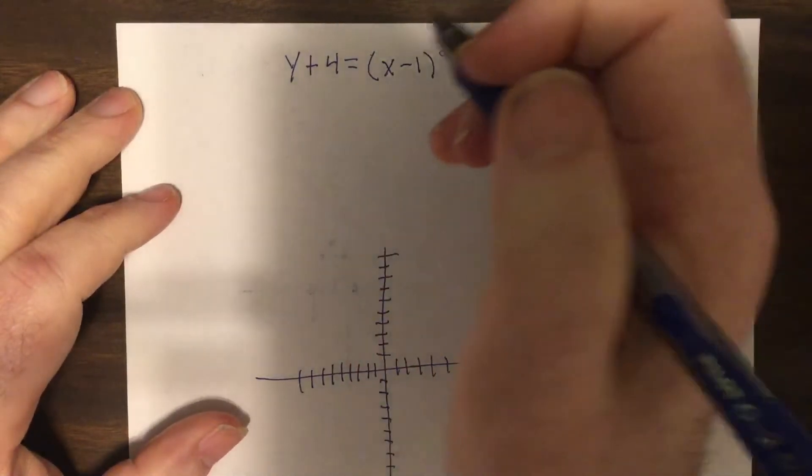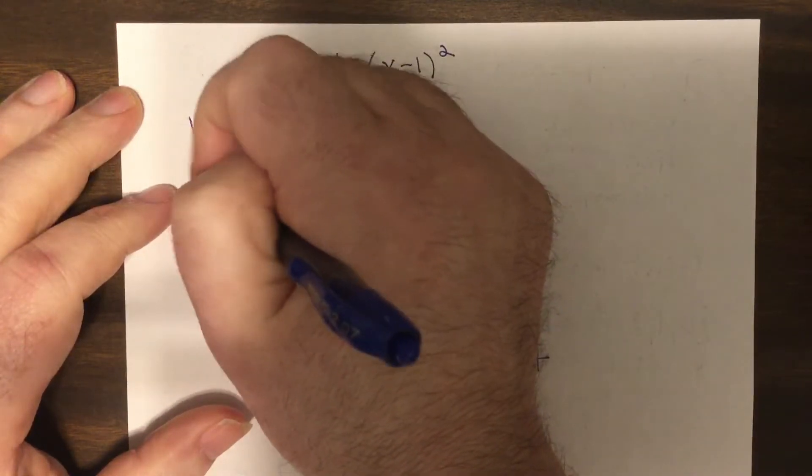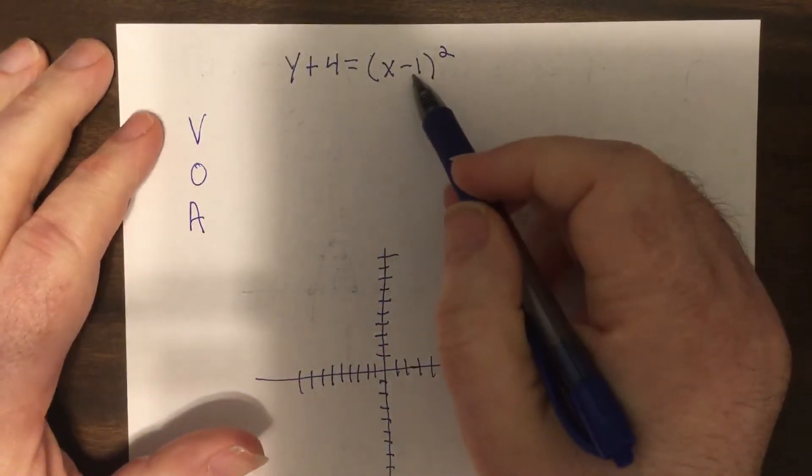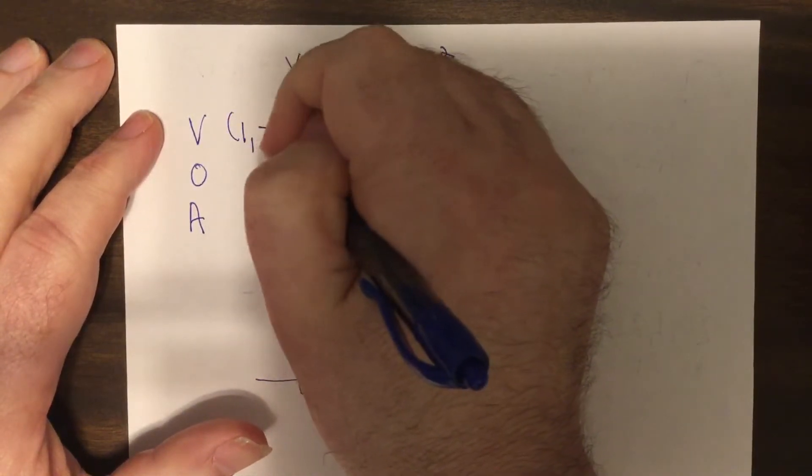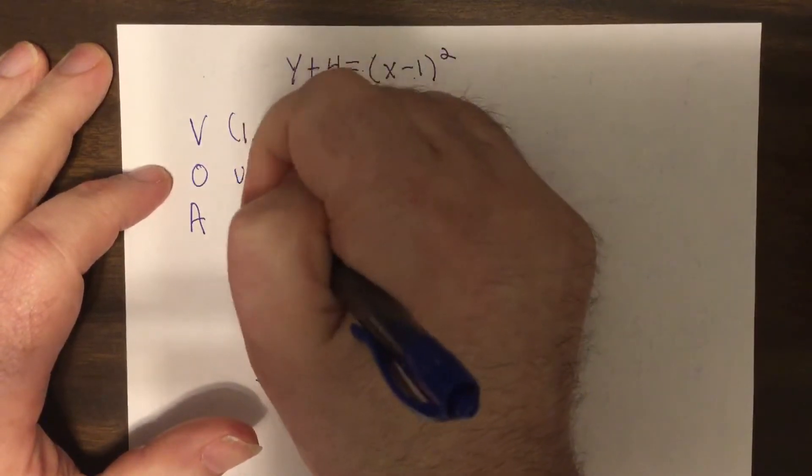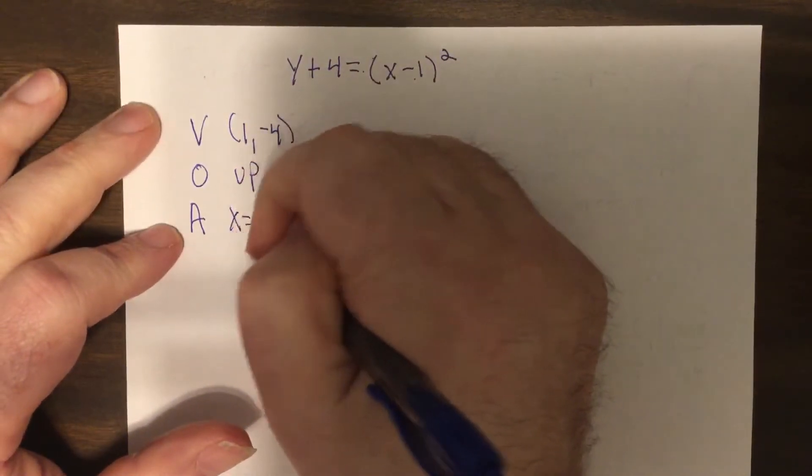But here we go. So do you know the VOA? This is from the V-shaped graph. So it'd be one negative four. This is positive. So it opens up and the axis would be X equals one.